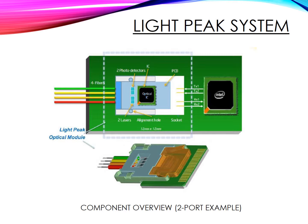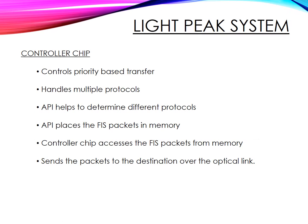The figure shows a component overview of a Light Peak system. The four optical fibers, the photodetectors, the lasers, and the optical IC form the optical module. To the right of the optical module is the Light Peak controller which controls the transmission and reception of data. The controller chip does priority-based transfer and handles all the protocols. The API helps to determine the protocol and places the data package in memory. The controller chip accesses these packets and sends them to the destination over the optical link.